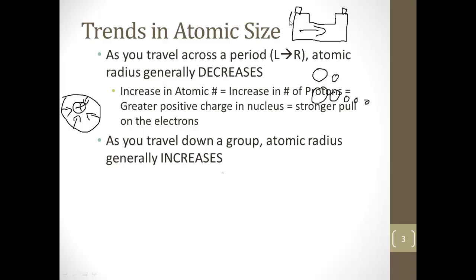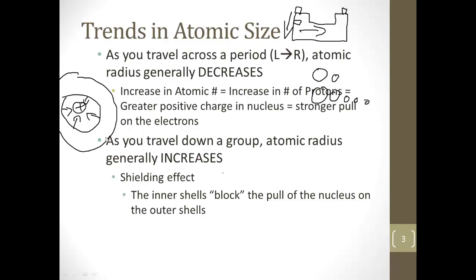Now, as you travel down a group, atomic radius generally increases. So as it goes across it gets smaller, but as you go down to the next principal energy level, to the next shell, you're putting a new shell around here and it's going to get bigger. And the reason for that is what we call the shielding effect. These inner shells are kind of blocking the pull of the nucleus on the outer shells. So the nucleus is pulling more strongly on this inner shell, but because this inner shell is in the way, it's not able to pull quite as strongly on this outer shell. And that's the shielding effect.